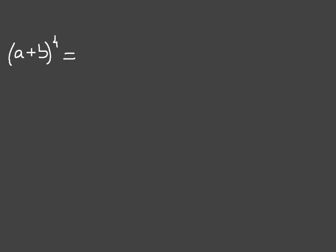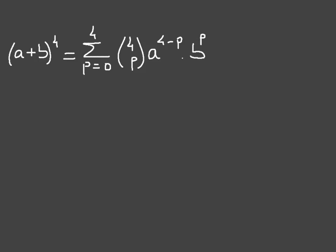Let's say we have to find all of the terms of (a + b) to the power of 4. What the binomial expansion formula tells us is that that's equal to the sum from p = 0 to 4 of the binomial coefficient C(4, p) times a to the power of (4 − p) times b to the power of p.